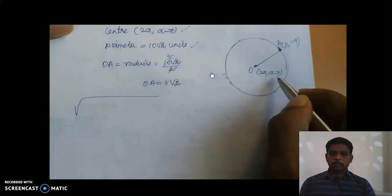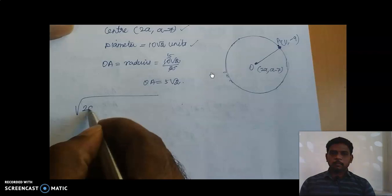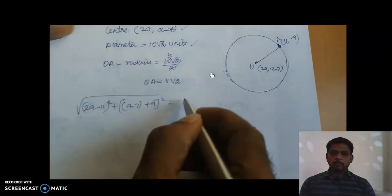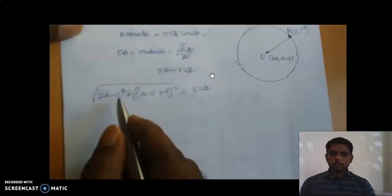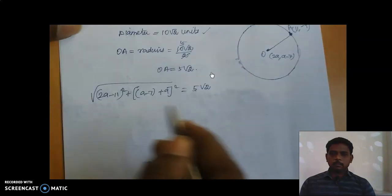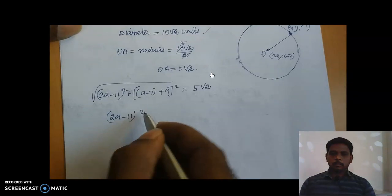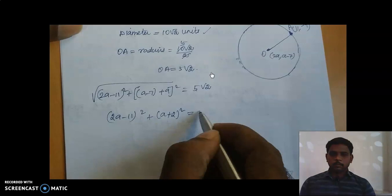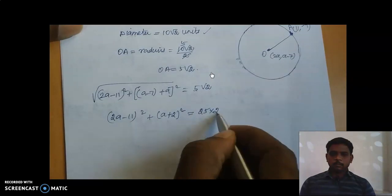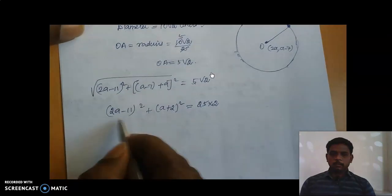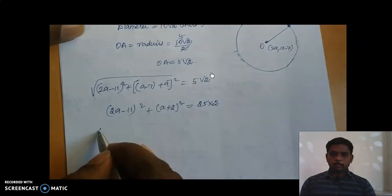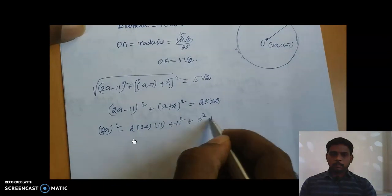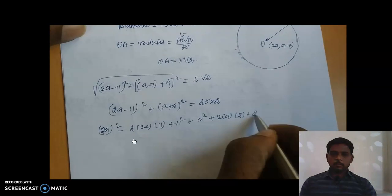Using the distance formula with coordinates x1, y1 and x2, y2: the distance OA equals √[(x1−x2)² + (y1−y2)²] = 5√2. Substituting the coordinates, we get √[(2a−11)² + (a−7+9)²] = 5√2, which simplifies to √[(2a−11)² + (a+2)²] = 5√2. Squaring both sides: (2a−11)² + (a+2)² = 50. We expand using the identities (a−b)² = a²−2ab+b² and (a+b)² = a²+2ab+b².